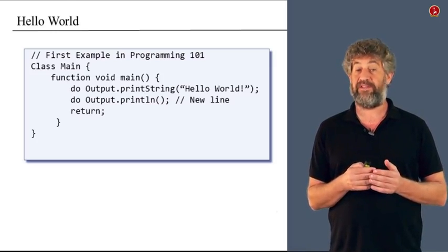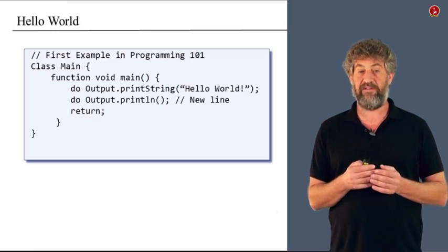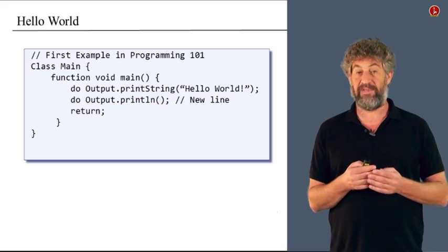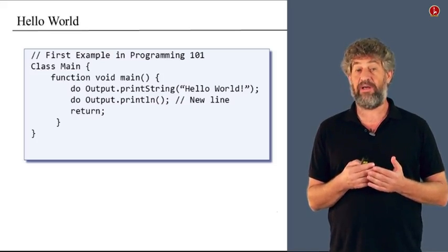You talk about various commands in the program. For example, the fourth line or the fifth line in what you see in front of you basically tells the computer to print a string Hello World on the screen. And that's really what the program does. And that's how you start a programming course, a programming 101 course.